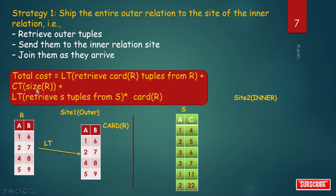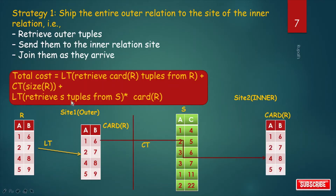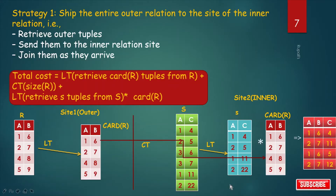Continuing strategy one cost calculation: CT size(R) to send the table to site 2, then LT to retrieve S tuples from S, and then perform the join. This gives the total cost for strategy one.